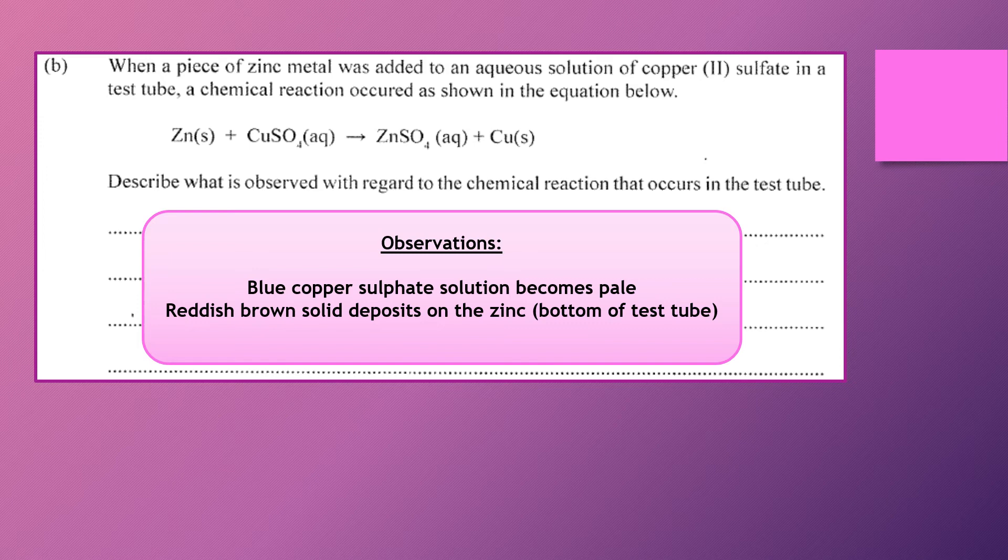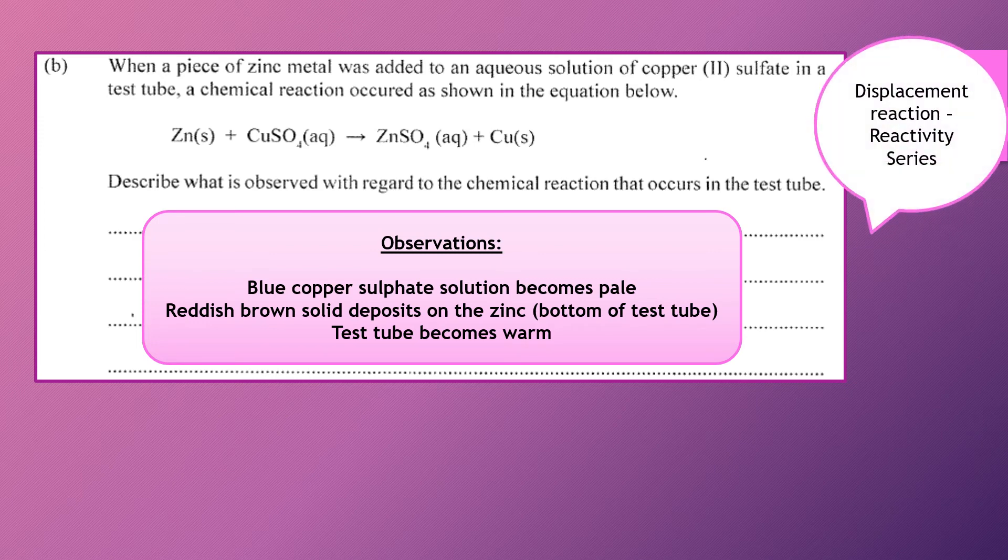You may also, if you feel that test tube, you may also feel that it becomes warm. And as we're saying, this is an example of a displacement reaction where based on the reactivity series, zinc being the more reactive metal higher in the series will displace the copper ions from solution.